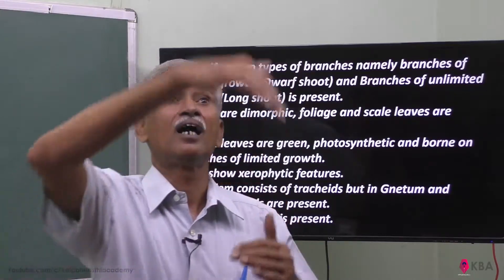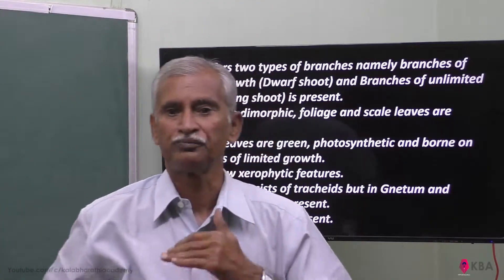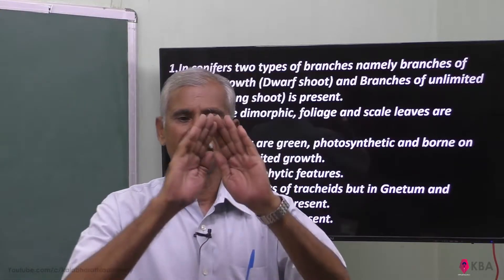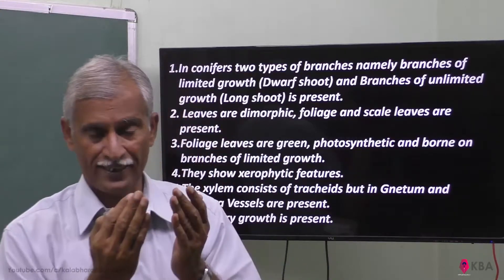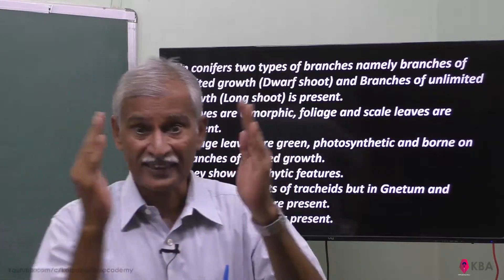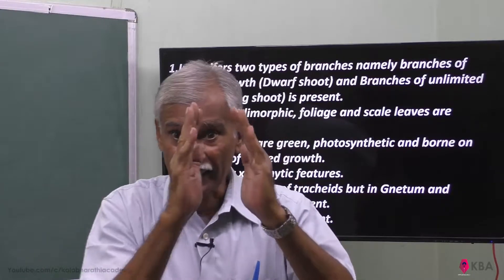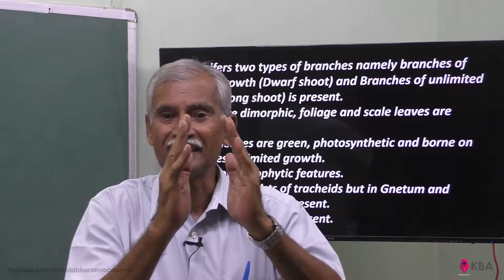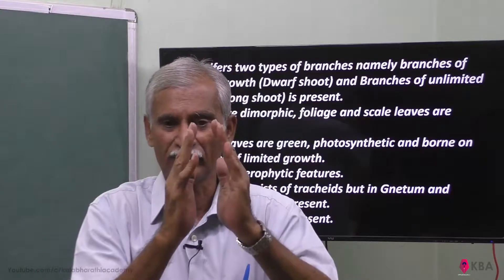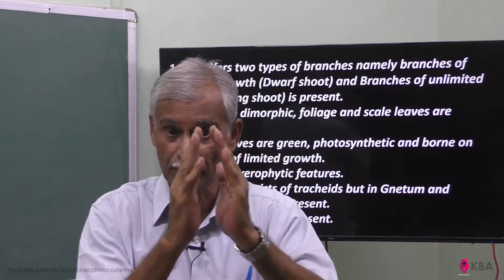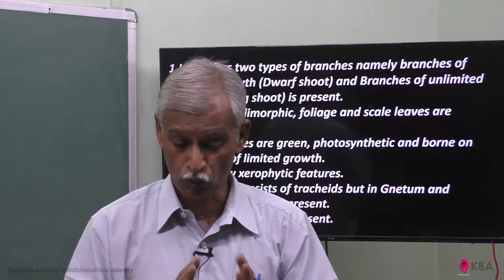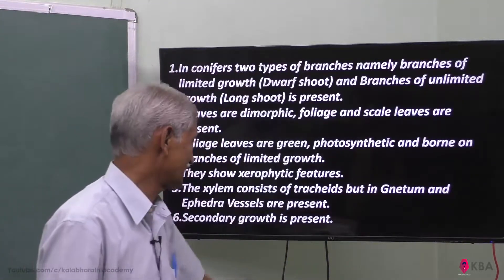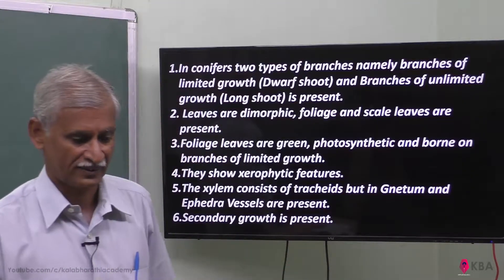So elongation of the stem or elongation of the root is primary growth. Secondary growth is the increase in girth — the plant becomes bigger in size. Secondary growth is present in gymnosperms.